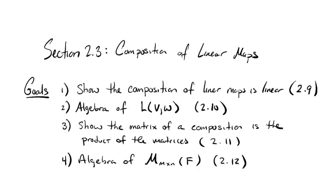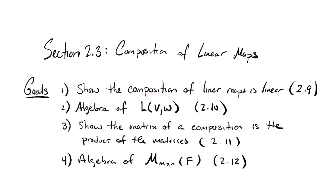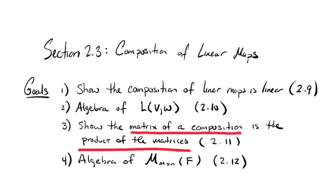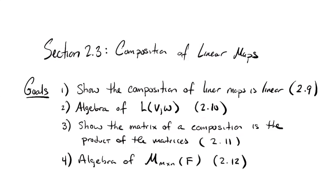Here's the outline: I want to show that the composition of linear maps is again linear — that's theorem 2.9 in the text. I'll discuss, leaving most of the work to you — some of it will be a formal exercise — the algebra of this new vector space of linear transformations; that's theorem 2.10. Then I want to show that the composition of two linear maps has a matrix once you choose ordered bases, and that matrix turns out to be the product of the matrices of the maps individually. That's theorem 2.11. And then a discussion of the algebra of the m by n matrices — theorem 2.12.